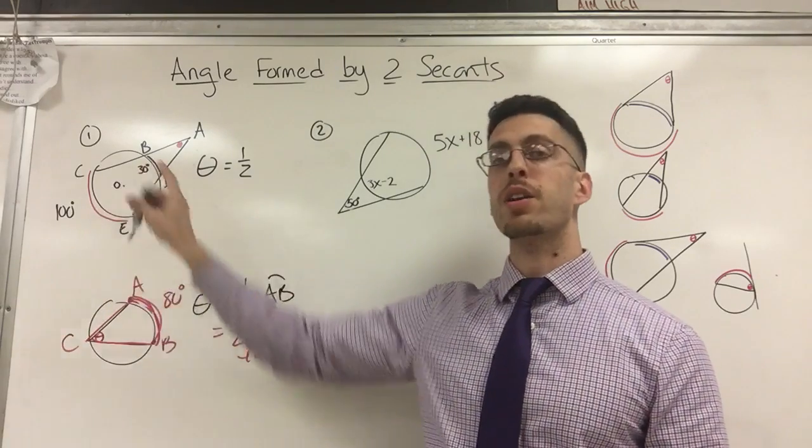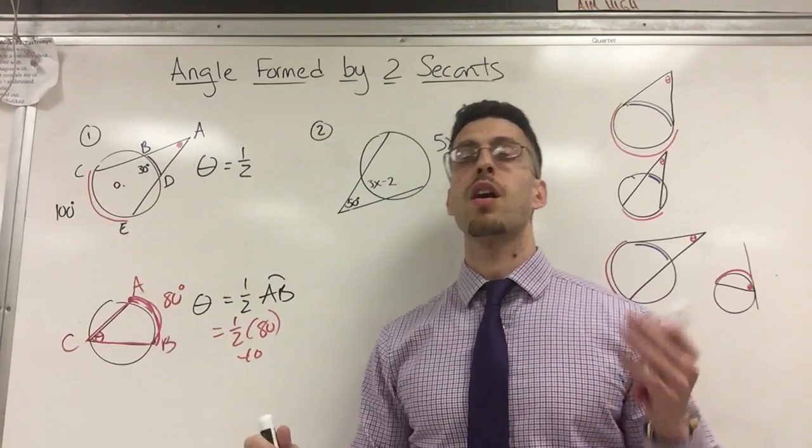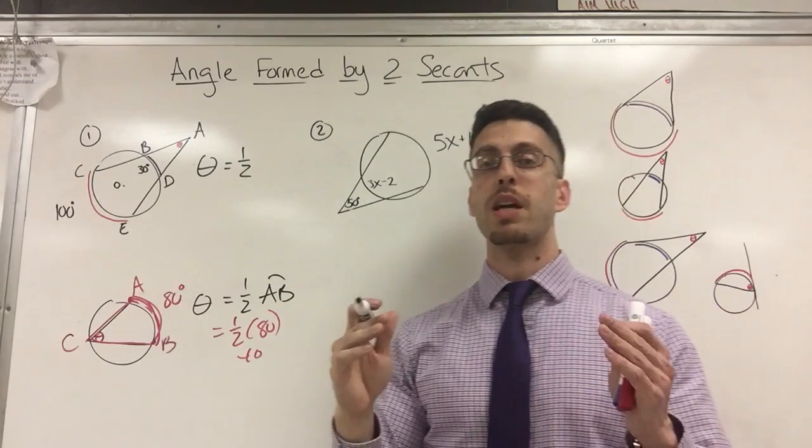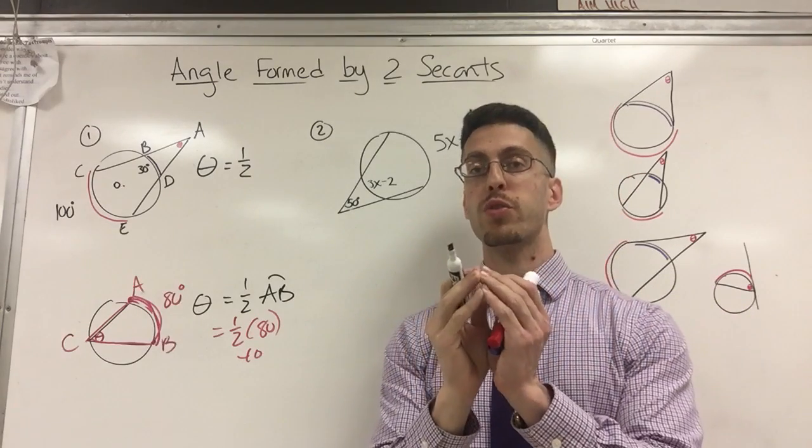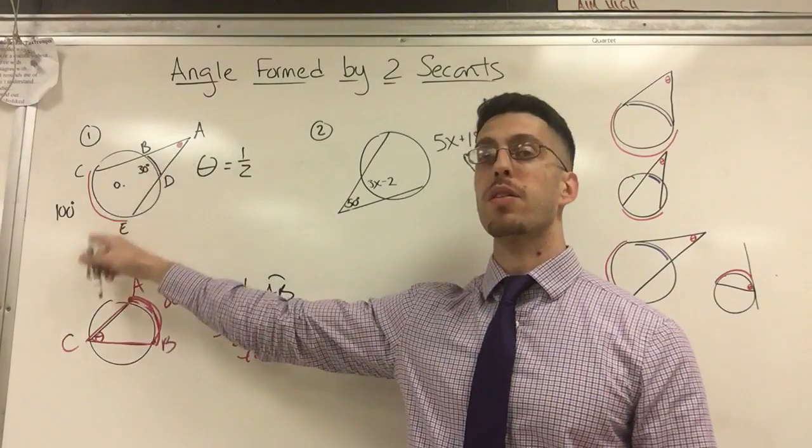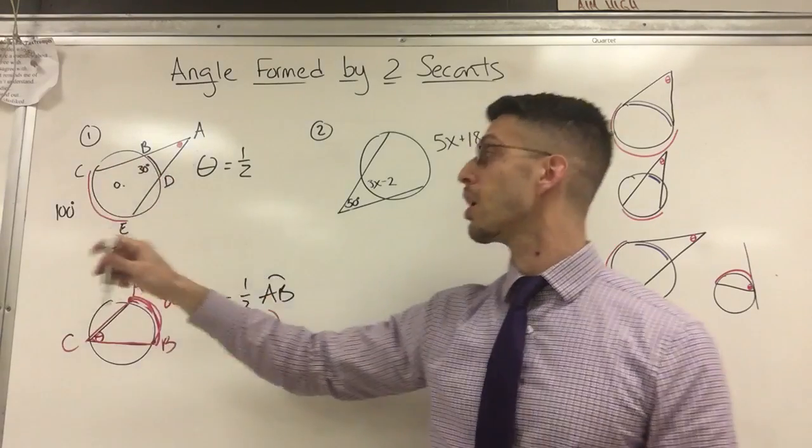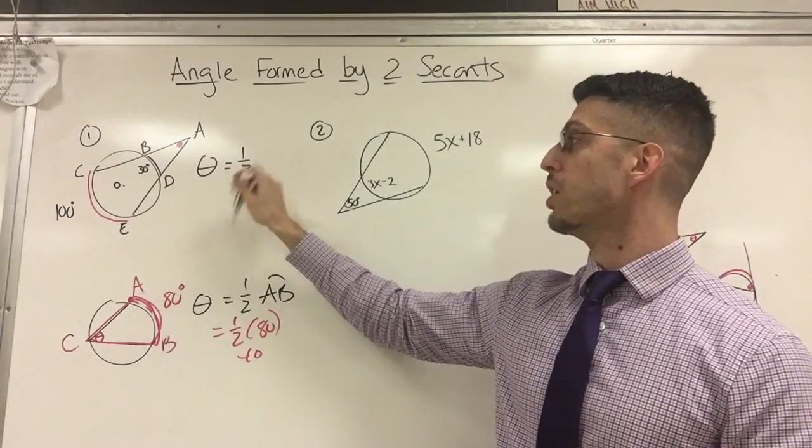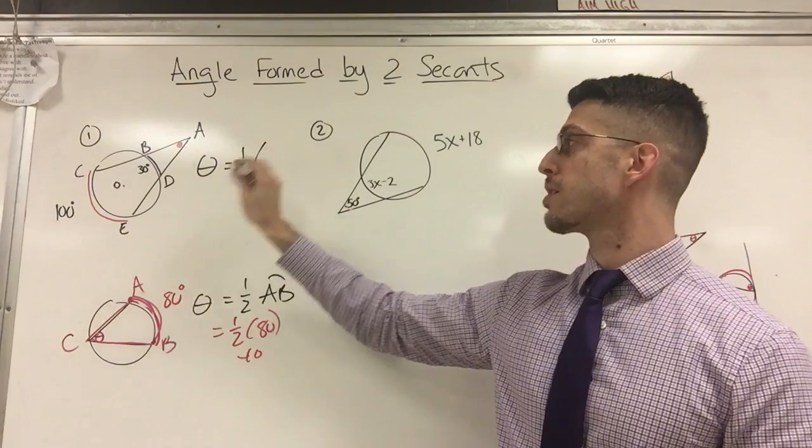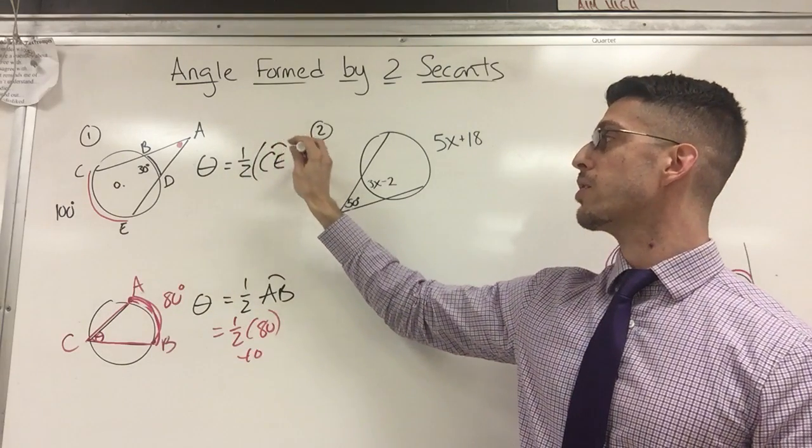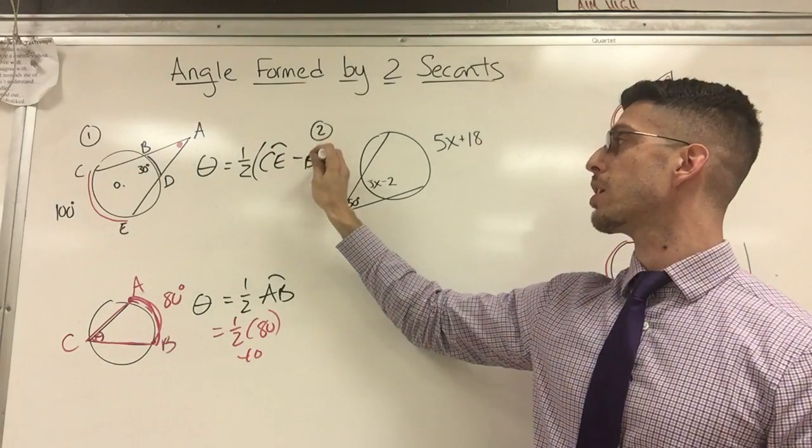Some people might say major and minor. I don't want to say major arc and minor arc because generally when I discussed major arc and minor arc, they combine to make a full circle. This is only part of the circle. So I'm just going to say big and little. Big intercepted arc, little intercepted arc. So that's one half what? CE, arc CE minus arc BD.